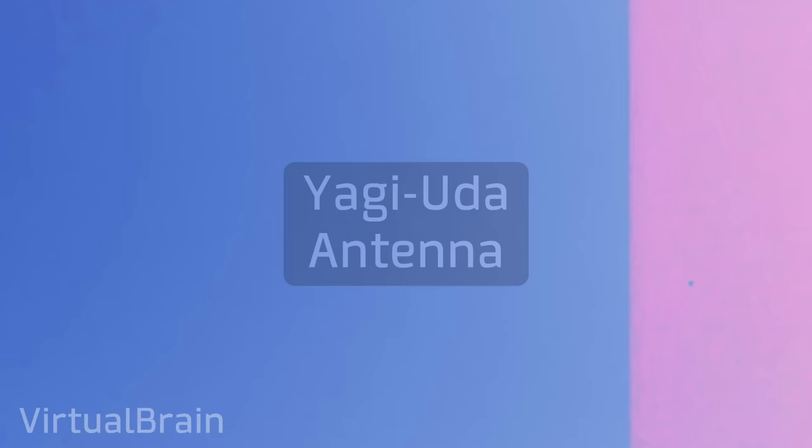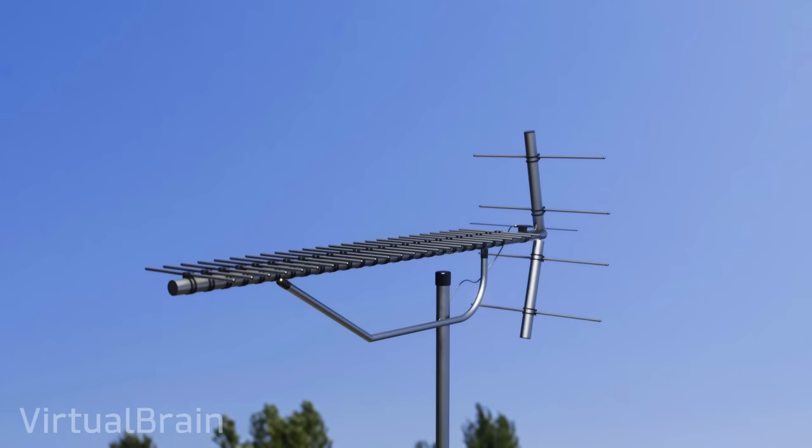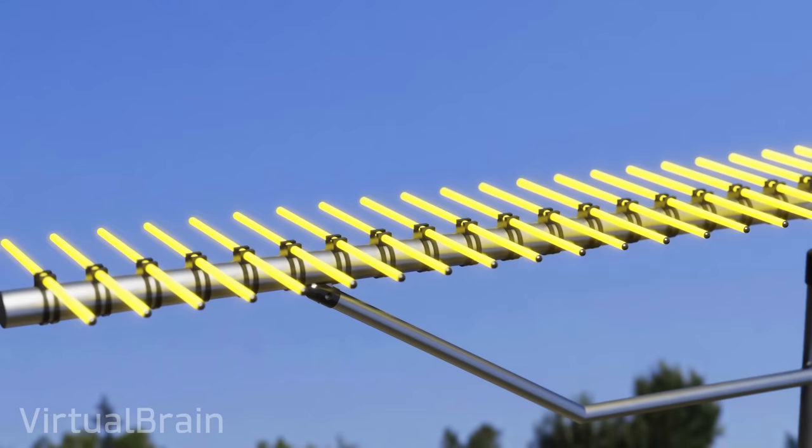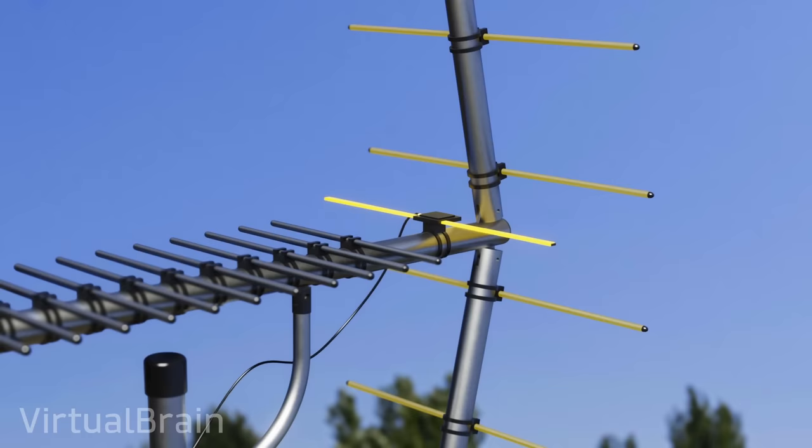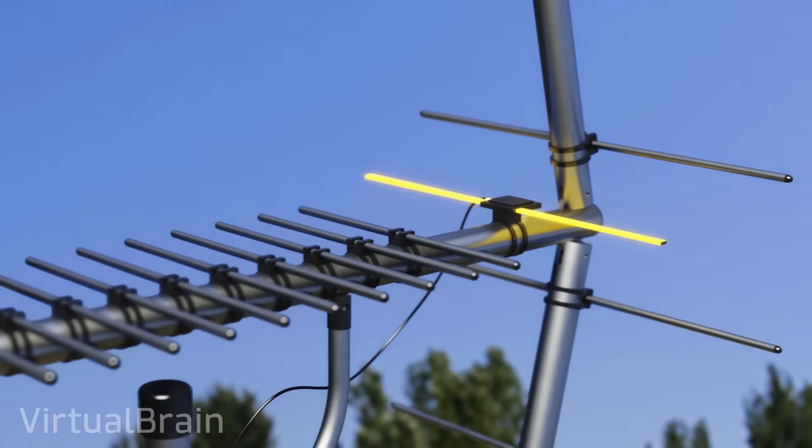Despite not being so popular anymore, you may have seen Yagi-Uda antennas at some point. They are composed of an array of dipole antennas placed parallel to each other in a horizontal plane. All of these dipole antennas are usually the same length except for one or more at the rear which are slightly longer and known as reflectors. In this antenna, a single dipole is fed with current, the one closest to the reflectors, while the rest of them amplify and direct the radiation, which means that this time we have a directional antenna.